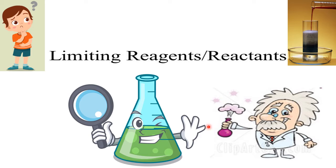After knowing the value for n, we determined the molecular formula, which is equal to the empirical formula multiplied n times. Those were the steps to determine the molecular formula using percentage composition. Today we are discussing one more interesting topic — limiting reagent, also called limiting reactant.